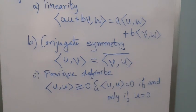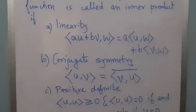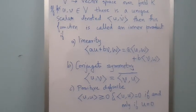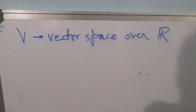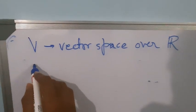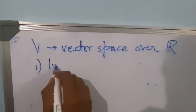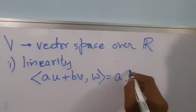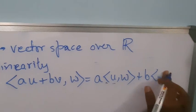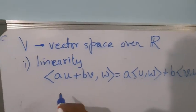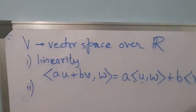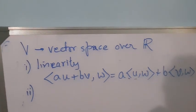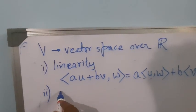Now, what happens if the field is the real numbers? If we replace the field with the field of reals, when V is a vector space over the field of reals, the first property will not change — that is, linearity will remain the same.